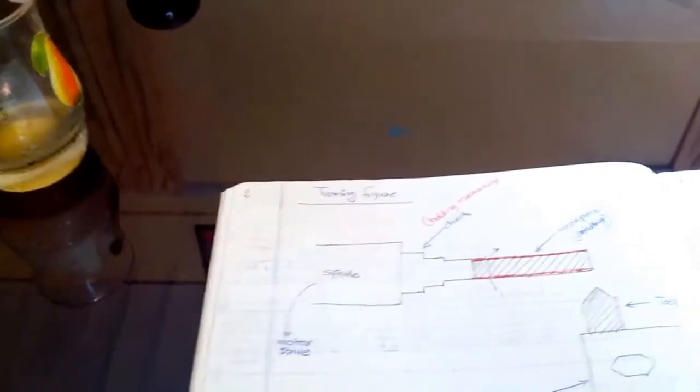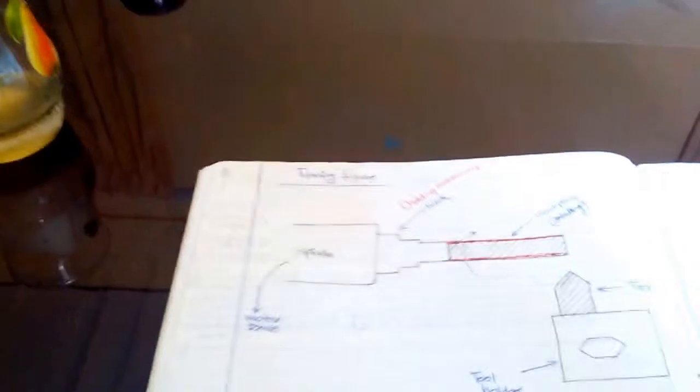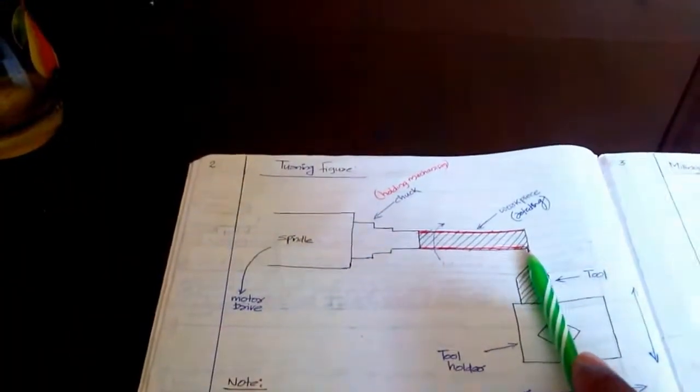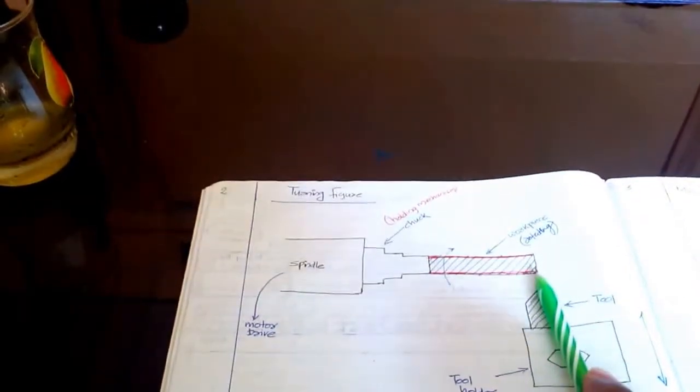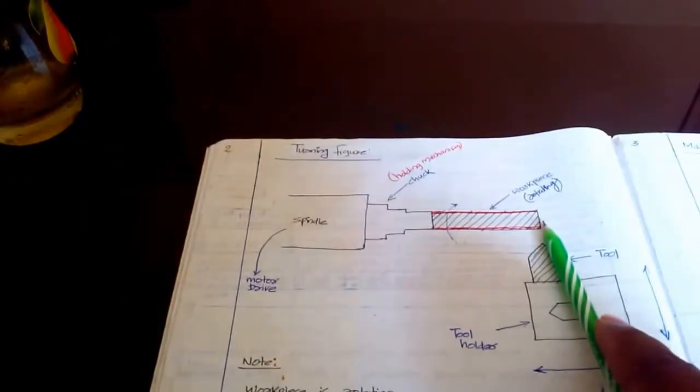That was the case of the X axis. And the surface, the right surface where the tip of the tool just touches the surface, this is the Z zero.